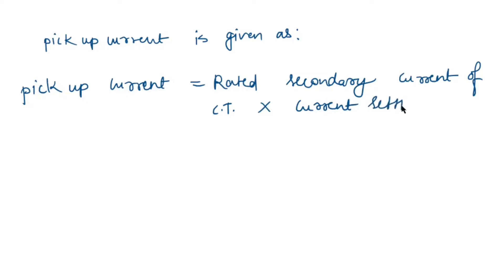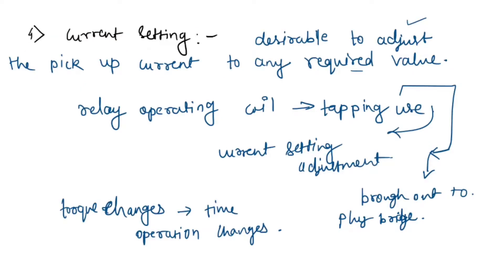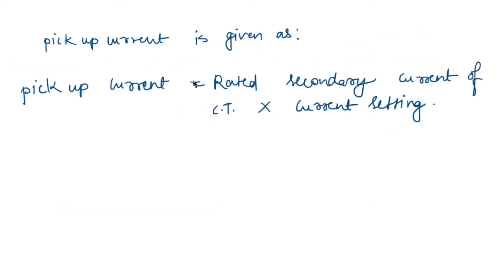The pickup current formula is: pickup current equals the rated secondary current of the CT multiplied by the current setting value. So pickup current is determined by the current transformer secondary side rated current and the current setting.